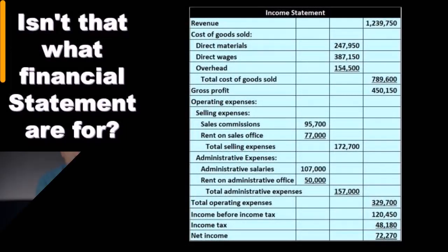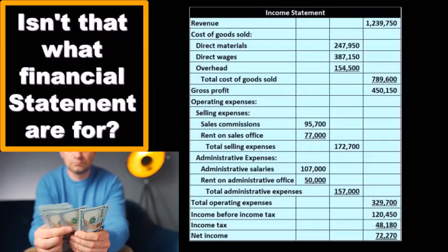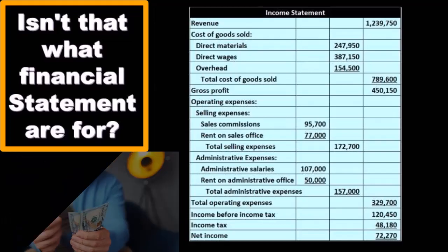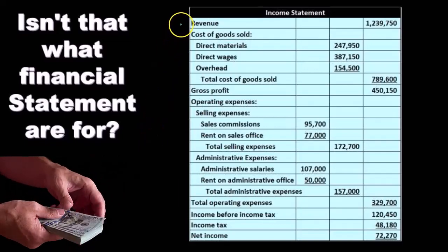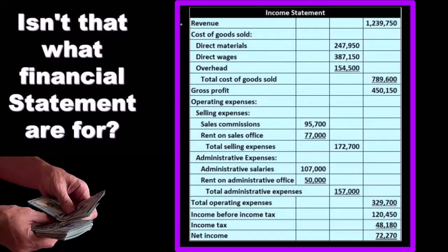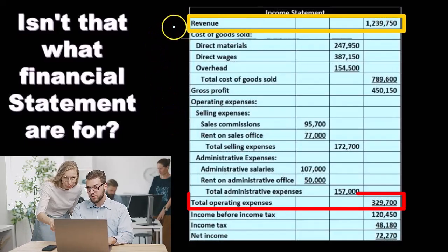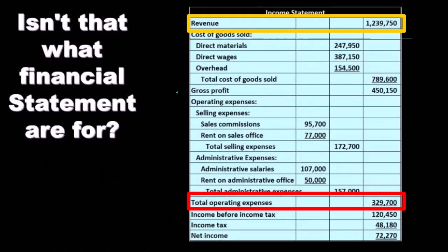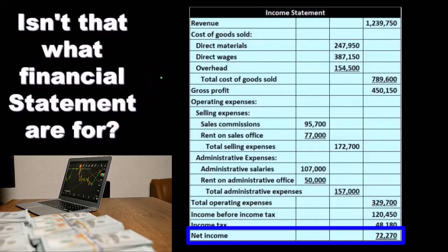You might think: isn't that what financial statements are for? What about the normal income statement — isn't it supposed to measure performance and help us make decisions in the future? The answer is yes, the financial statements do that, but there are some limitations in terms of forecasting. The income statement measures performance over time — in essence, revenue minus expenses — giving us that bottom line net income. The difference usually is where we categorize the costs.